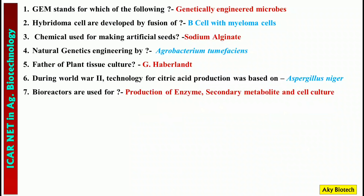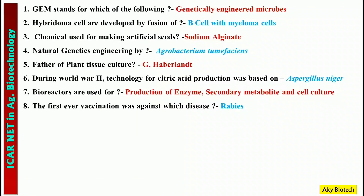Question 7: Bioreactors are used for — production of enzymes, secondary metabolites, as well as cell culture. Question 8: The first-ever vaccination was against which disease? — Rabies.